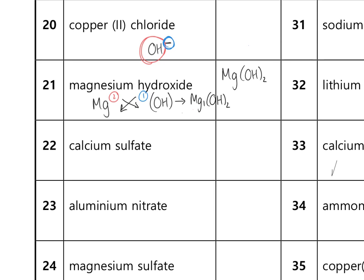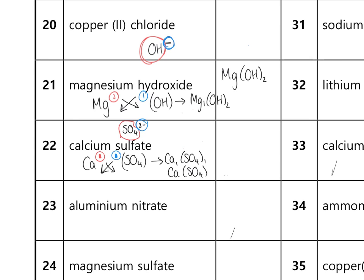Example 22: calcium sulfate. Ca for calcium; sulfate is SO₄²⁻, write SO₄ in brackets. Calcium valency two, sulfate valency two — ratio 2:2 cancels to 1:1. Swap and drop: Ca¹(SO₄)¹. Ignore the ones and since there's no number outside the brackets, drop them too. Formula is CaSO₄.